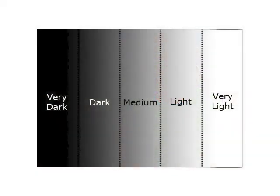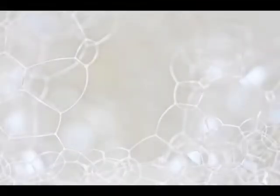Let's take a look at what your histogram looks like. First of all, this is the graph without any image information. The leftmost edge represents pure black and the rightmost edge represents pure white, and all the shades of grey are represented in between.